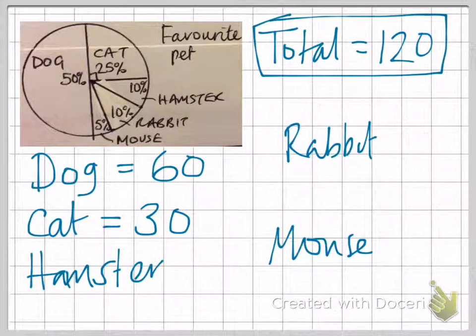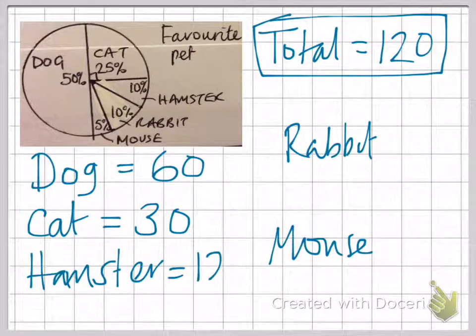The hamster is 10%. To work out 10%, remember to divide by 10. So we'll get 12 people who voted for hamster. And the rabbit will be the same because they're both 10%.